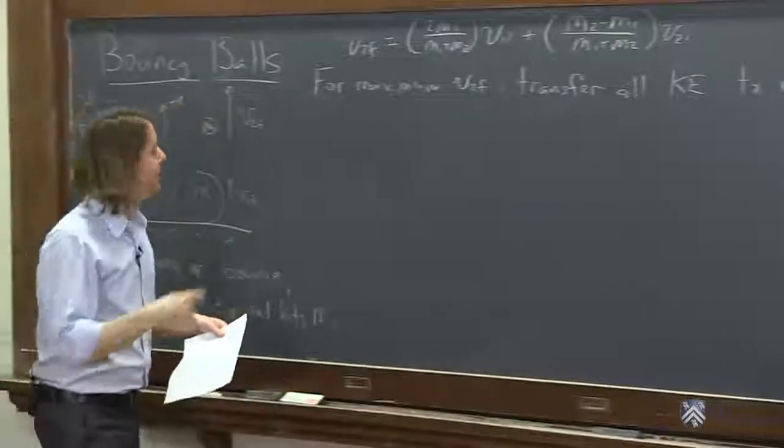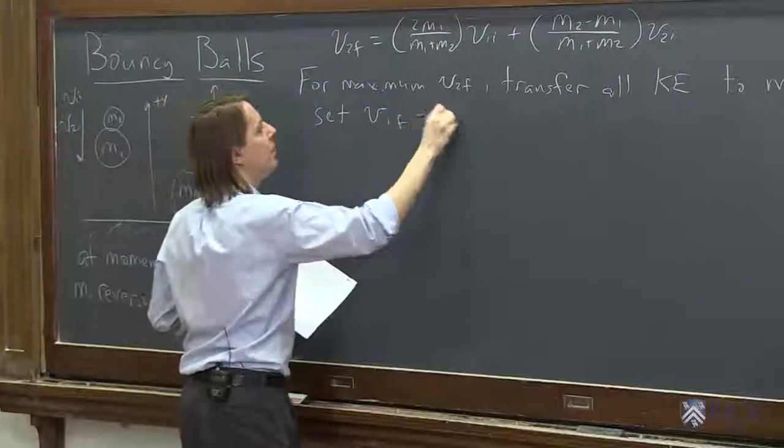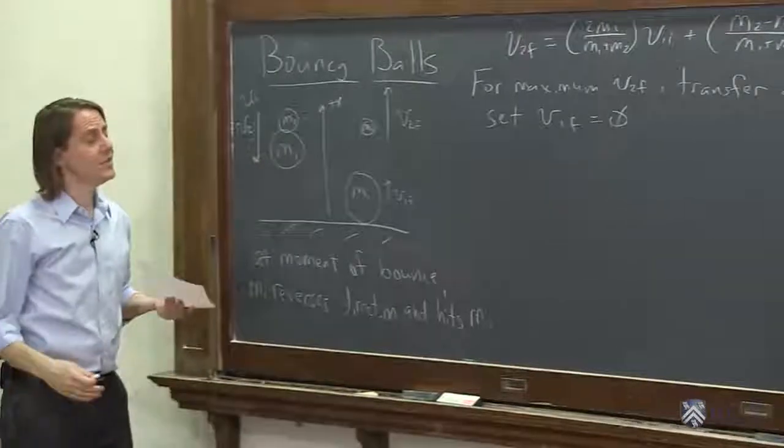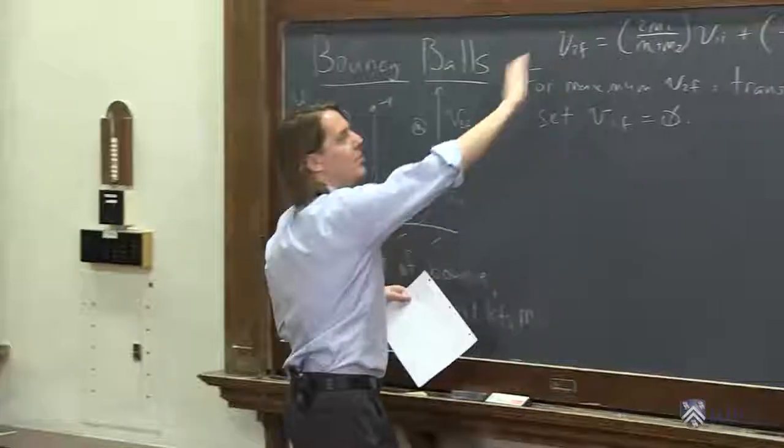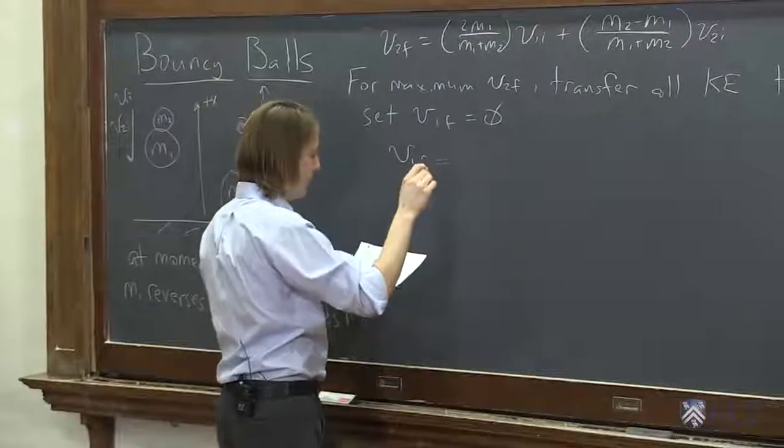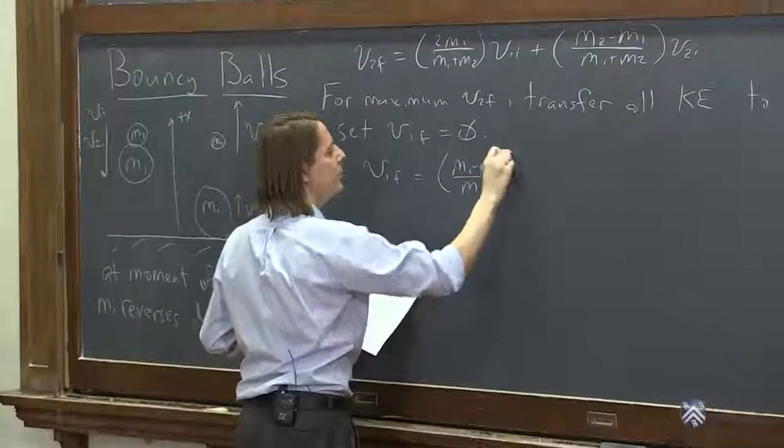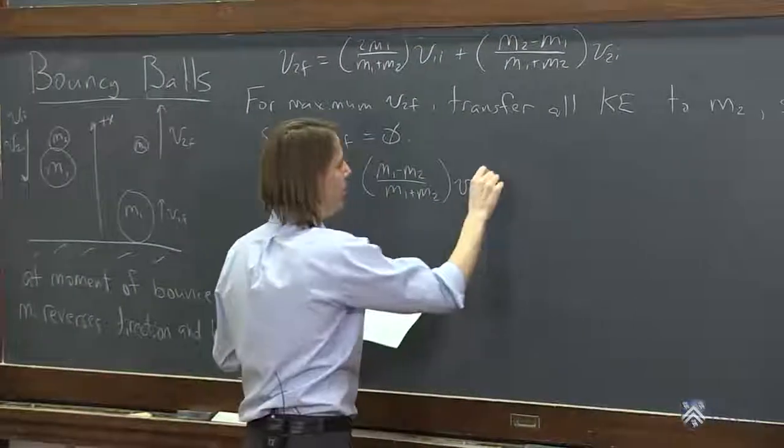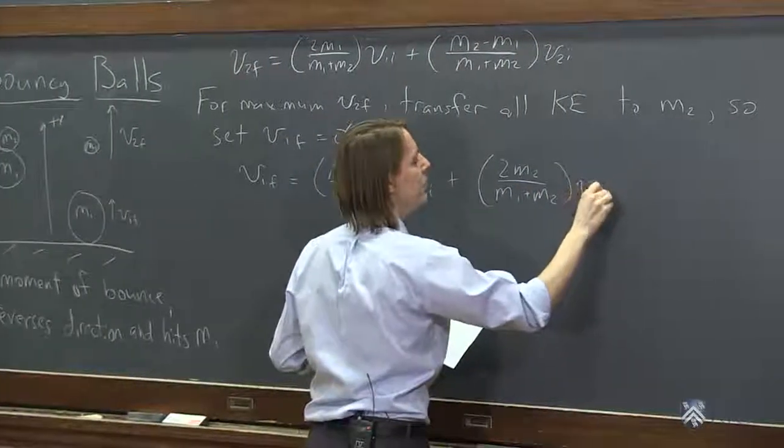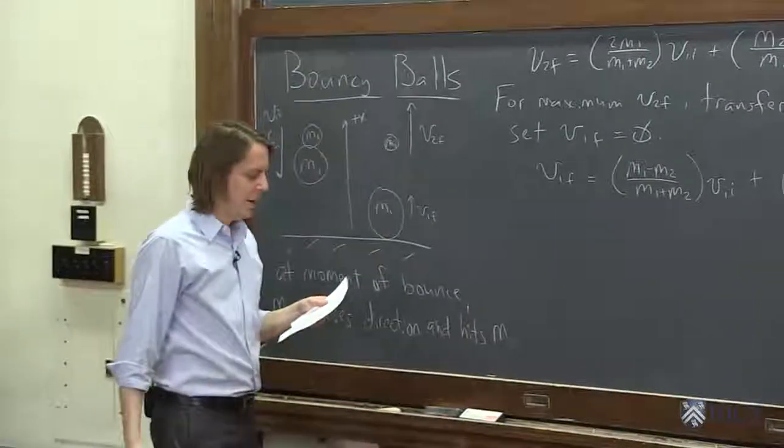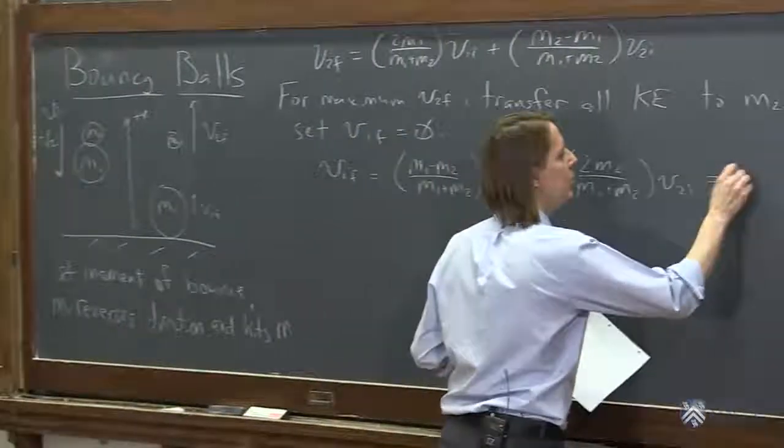So what that means is make V1f zero. Set V1f equal to zero. And that should give you some condition for when you get the maximum push on the small mass. So we actually don't want this equation at all. We want this equation, V1f. That was M1 minus M2 over M1 plus M2 V1i plus 2M2 over M1 plus M2 V2i. So we want to take that and say that has to be zero.